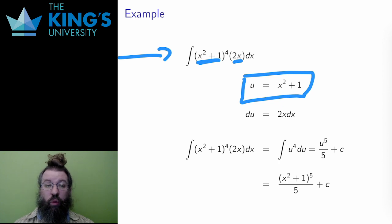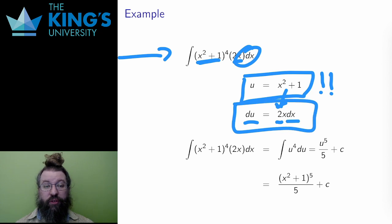Unlike the chain rule, where labeling the inside was a bit optional, here labeling the inside is necessary, and something I expect you to do in assignments and exams. In addition to the substitution itself, I need to know how to transform the dx. This is done with the derivative of the substitution, and the derivative of x² + 1 is 2x, so du must replace 2x dx.